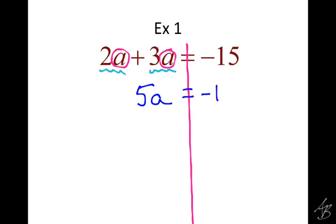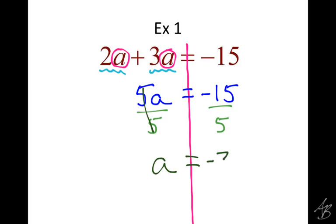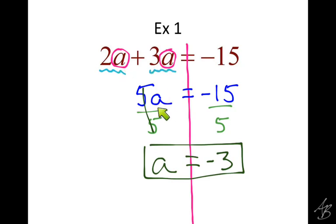On the other side we bring down our negative 15, and then to get A by itself we divide by 5. That solved our problem for us — it got the A in one place. When we combine like terms, instead of having the A in two different places, now we have it in one place and we can get it by itself.